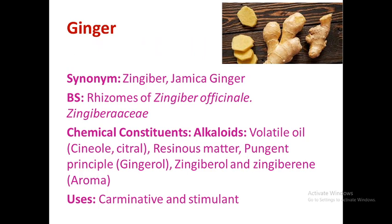The second important plant is ginger, also known as Jamaica ginger or Zingiber. These are the dried rhizomes — asparagus are roots whereas ginger are rhizomes — of Zingiber officinale belonging to family Zingiberaceae. It contains alkaloids as a major chemical constituent, volatile oils containing cineol and citral as terpenes, resinous matter, and the pungent principle gingerol. The constituents gingerol and shogaol are responsible for the characteristic aroma of ginger. It is used as a carminative and stimulant.